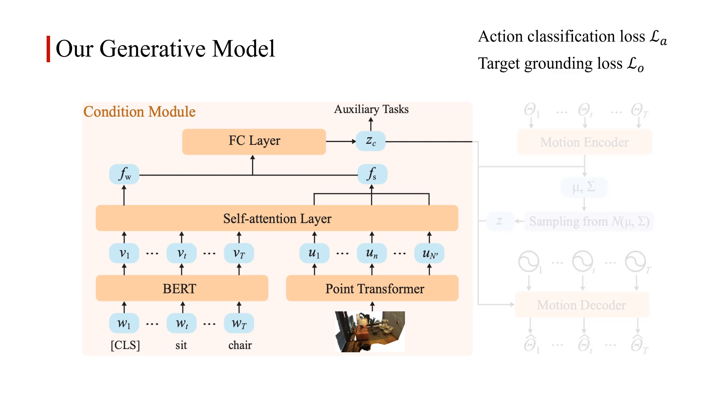In the condition module, we employ a pre-trained BERT and point transformer to process the input 3D scene and language description. We then fuse the scene feature and language feature with a self-attention module. The scene and language features are concatenated and mapped to a joint conditional latent embedding.